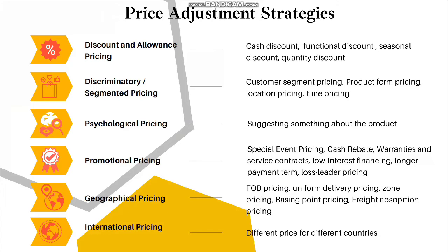The fifth adjustment strategy is geographical pricing. Examples include FOB pricing, where the customer pays freight from the factory to the destination, uniform delivery pricing, zone pricing, base-point pricing, and freight absorption pricing. The sixth is international pricing, where different prices are set for different countries depending on the country's currency.